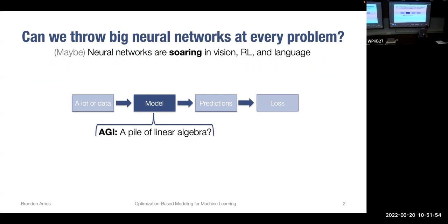One big question in the machine learning community is what should machine learning models look like. Should they just be a pile of linear algebra thrown at a lot of data — where we take data, throw it into the model, get some predictions, and feed that forward? Maybe if we train on the entire internet dataset, we can get reasonable predictions. This is impressive work, and maybe we can throw big neural networks at every problem if we have enough data.